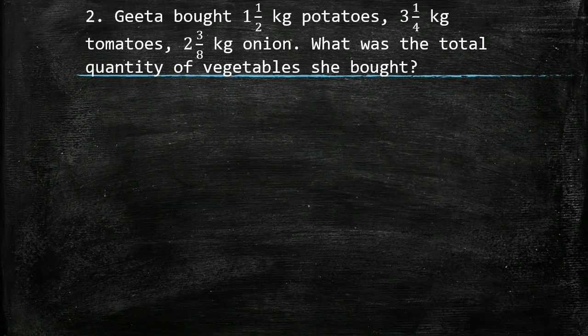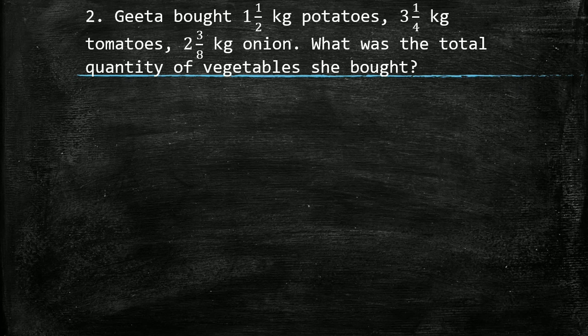Next question: Geeta bought 1 whole 1 by 2 kg potatoes, 3 whole 1 by 3 kg tomatoes, and 2 whole 3 by 8 kg onion. What was the total quantity of vegetables she bought? Quantities of potatoes, tomatoes, and onion are given to us. We have to find out the total quantity of vegetables bought, so we will add all these 3 quantities.